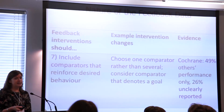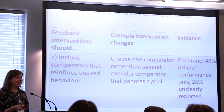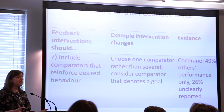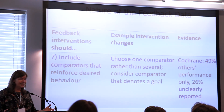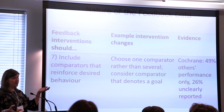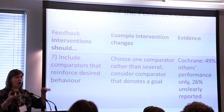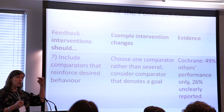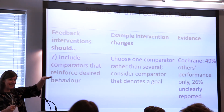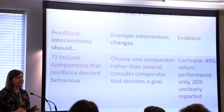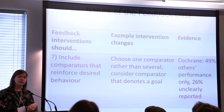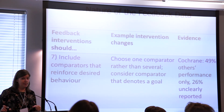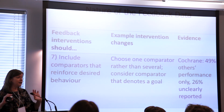Include comparators that reinforce the desired behavior. Most of audit and feedback is my group's performance compared to another group. When you think about it, that doesn't denote a goal at all. If we're all doing horribly, it doesn't matter — if I'm doing a little bit better than my peers, I'm going to think I'm good, even though we're all really bad. So having a benchmark — a goal that says this is where we all should be, this is where you are, this is where your group is. We should avoid multiple comparators — people will choose the comparator they prefer, the one that means they don't have to do anything, the one that says I'm doing a good job.